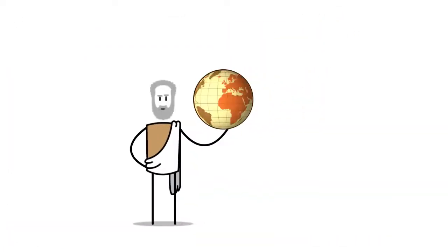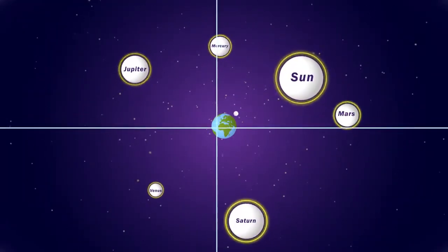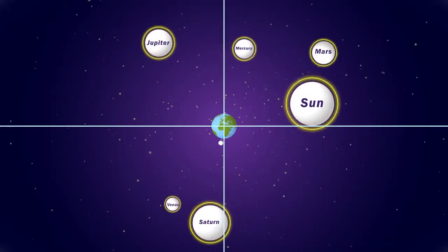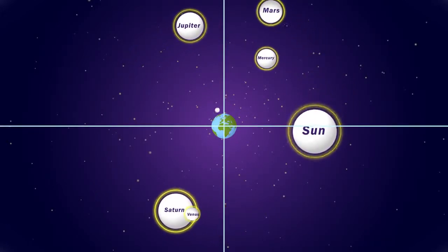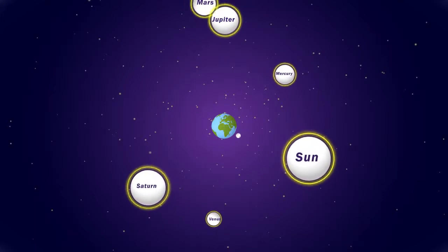Galileo also refuted the popular Aristotelian belief that Earth is fixed in the center of the universe, while the stars and planets are metaphysical beings that revolved around it. This is known as geocentrism.